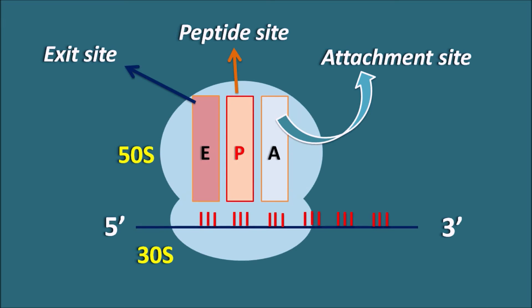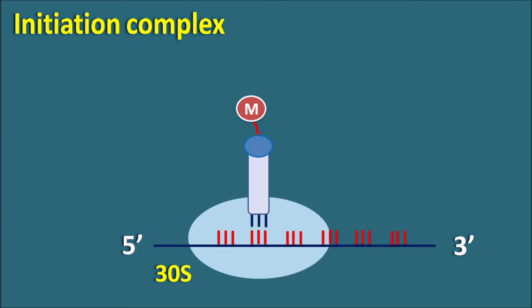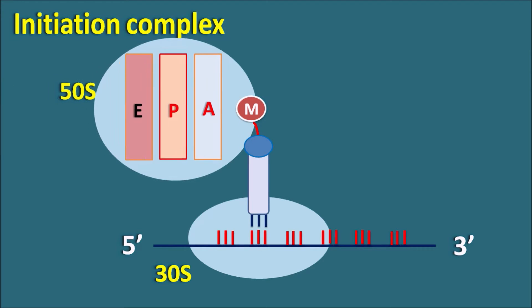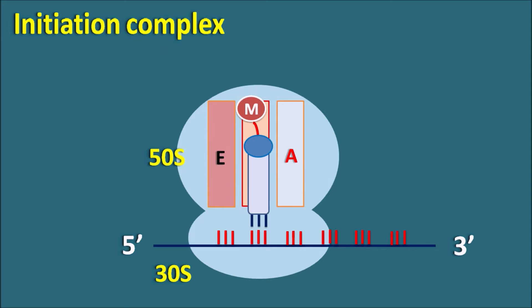Now we will see the important steps where the drug targets act. One important step in initiation is the formation of the 70S initiation complex. Within bacteria, the 30S subunit attaches with the mRNA along with the initiator codon, formyl methionine. This 30S subunit then forms a complex with the 50S subunit to form the 70S initiation complex. After this step it can undergo the elongation step and start protein synthesis.